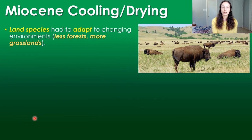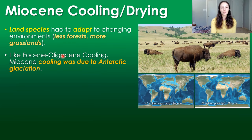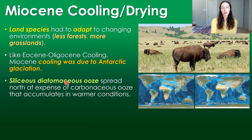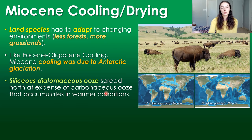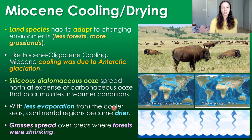What about land species during the Miocene? Cooling and drying were occurring, so land species had to adapt to cooler, drier environments — less forests and more grasslands. Like the Eocene-Oligocene cooling, Miocene cooling was also due to Antarctic glaciation continuing to expand. We can tell this via siliceous diatomaceous ooze — silica ooze from diatoms — spreading north at the expense of carbonate precipitating organisms that formed carbonaceous ooze in warmer environments. Aridity was also increasing due to less evaporation from cooler oceans, meaning less water vapor in the atmosphere, causing grasses to spread over large terrestrial areas.